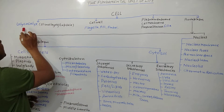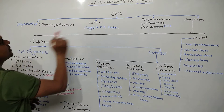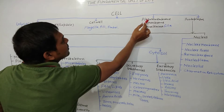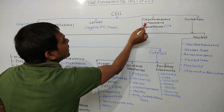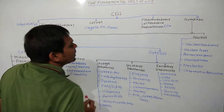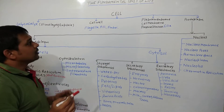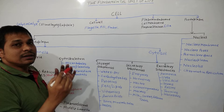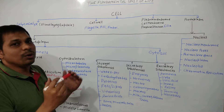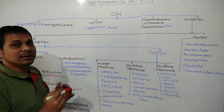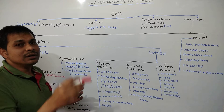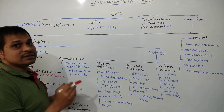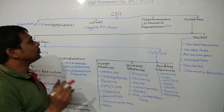Glycocalyx, cell wall, and plasma membrane or cell membrane — these are the cell envelopes. They make the boundary of the cell.